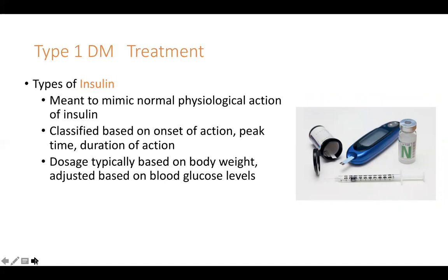The insulin available on the market is meant to mimic physiological insulin — it's recombinant human insulin with a genetically modified amino acid structure, tweaked to get different pharmacokinetics. Some types last longer than others. We used to obtain insulin from pig and dog pancreases — hundreds of pancreases were ground up to produce it. Dosing is based on body weight and blood glucose levels, and can be affected by age, insulin sensitivity, activity level, and liver function.